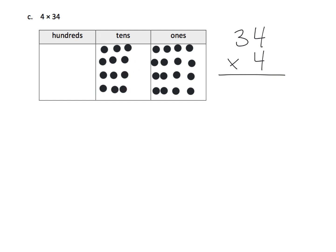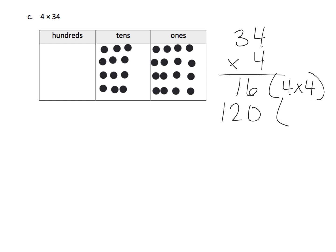So what do we end up getting? We started with 4 ones and multiplied by 4, so we now have 16 ones. We get that by doing 4 times 4. And over here in the tens, how many tens do we have? We have 12 tens — because we started with 3 tens and multiplied by 4. And 12 tens is 120, because we did 4 times 30.